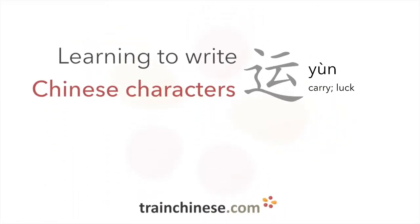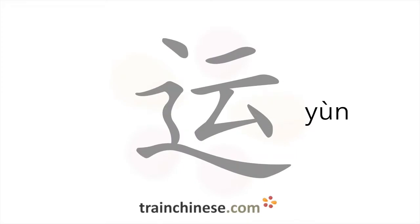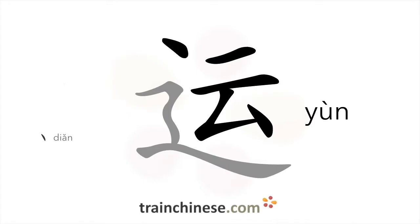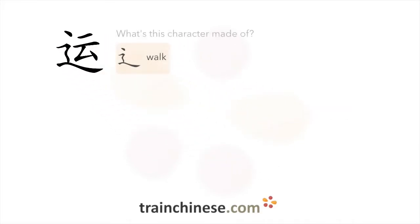Let's take a look at this character. It's written with seven strokes. Let's look at how this character breaks down. The radical being used here means walk.